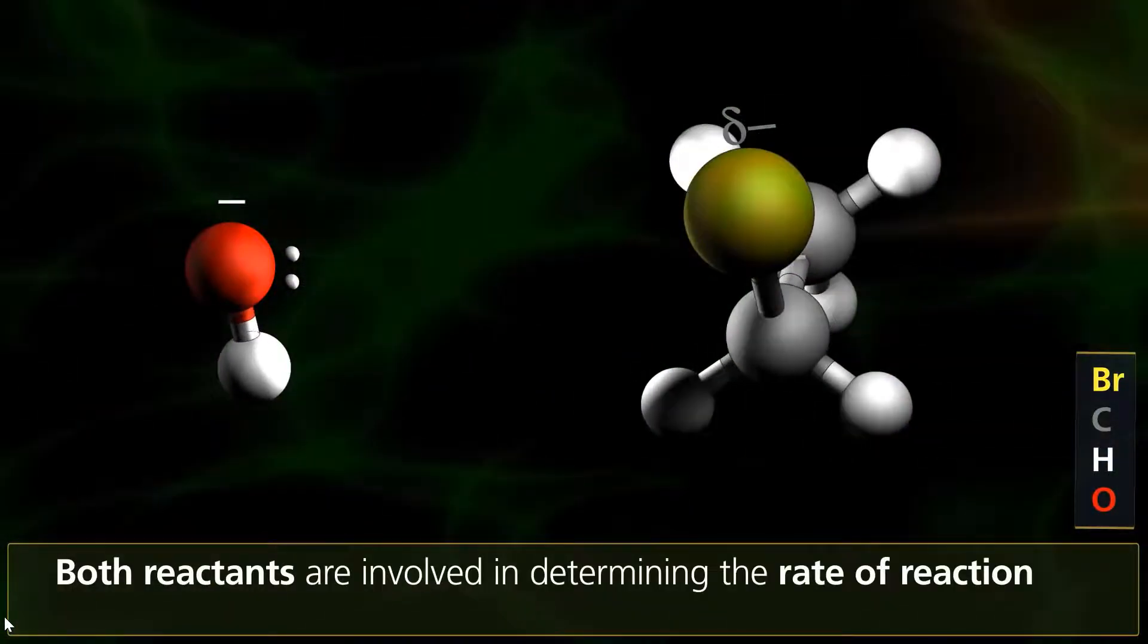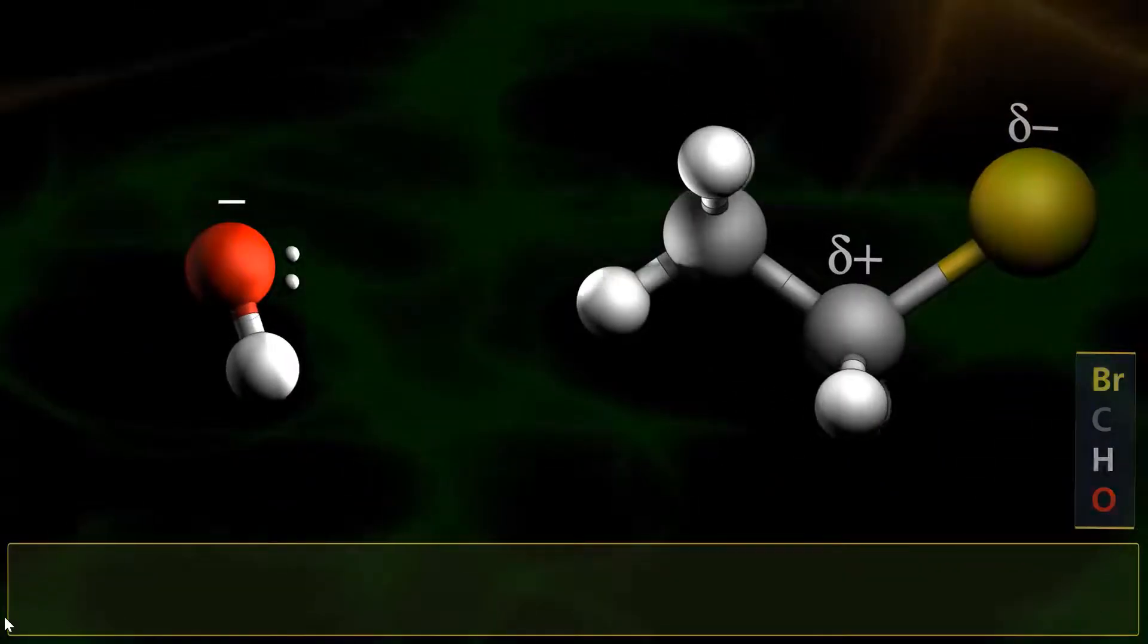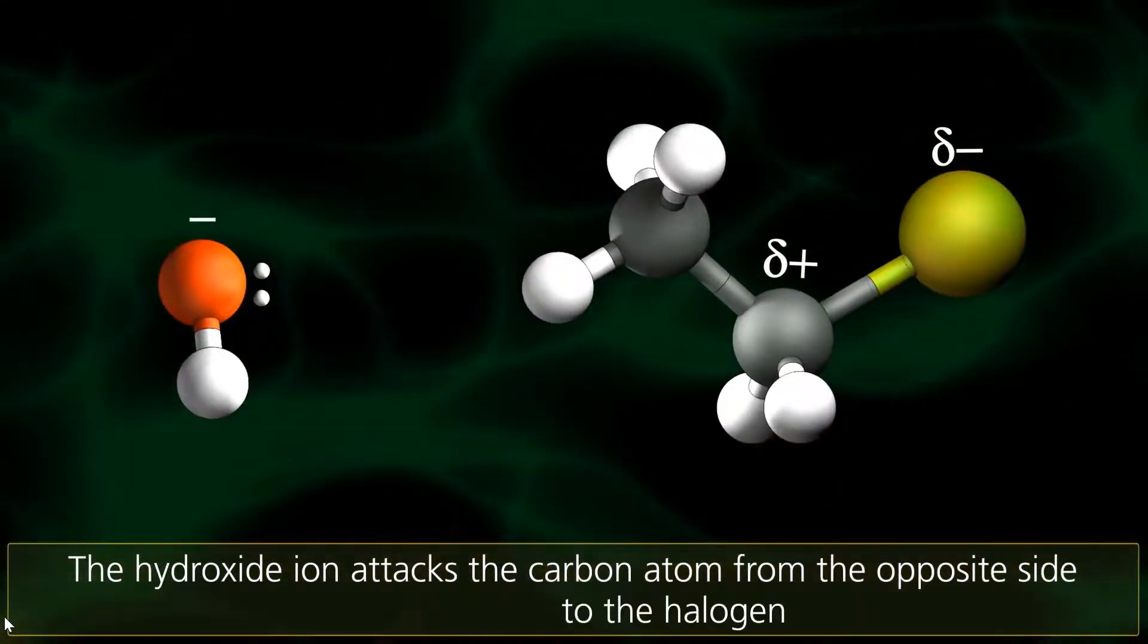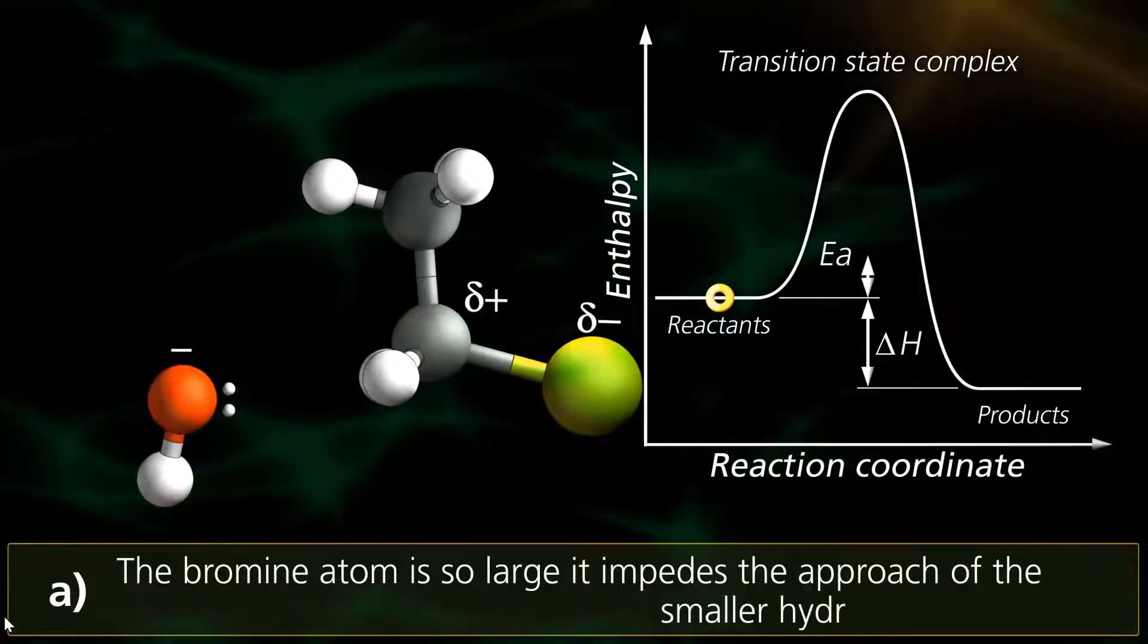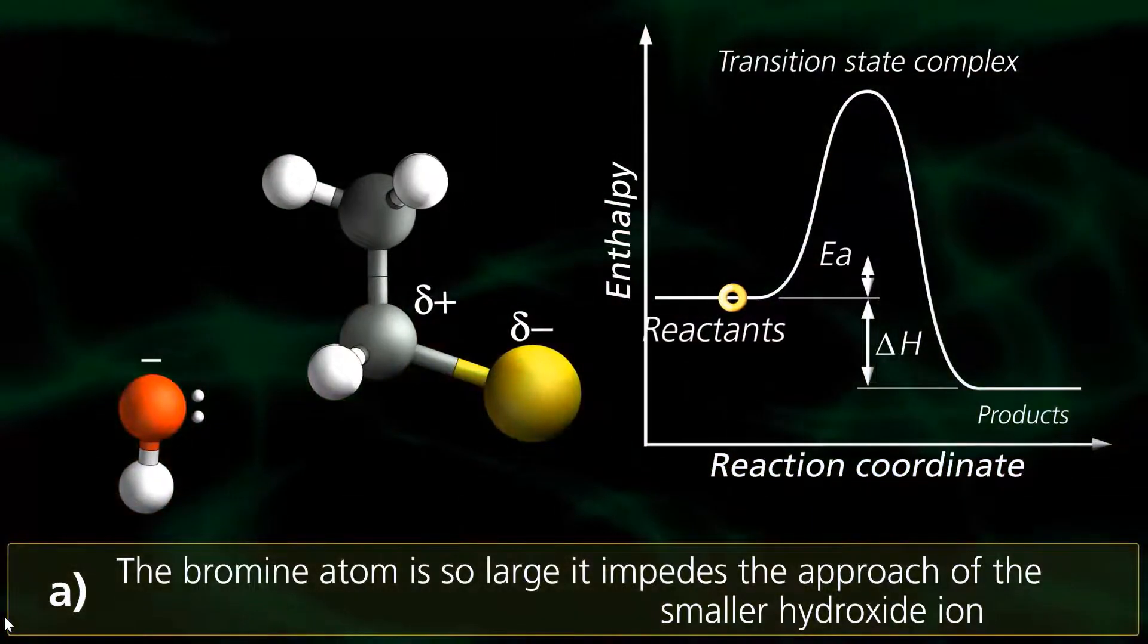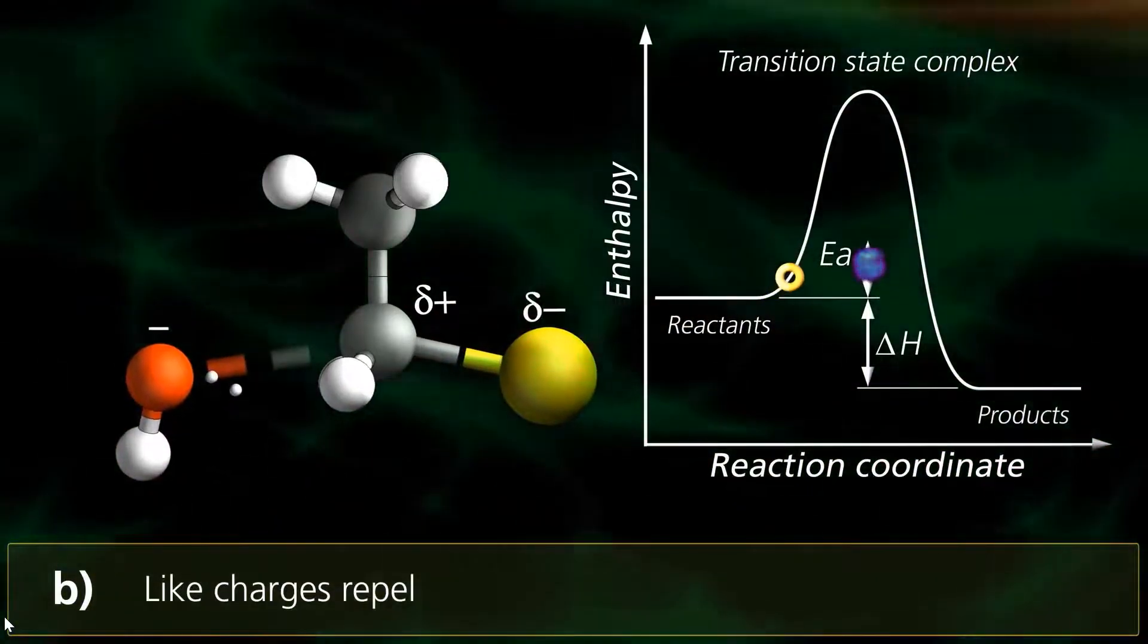Consider the reaction between a hydroxide ion in solution and bromoethane. Both reactants are involved in determining the rate of the reaction in a one-step process. The hydroxide ion attacks the carbon atom from the opposite side to the halogen atom, because the bromine atom is so large it impedes the approach of the smaller hydroxide ion, and it repels the negative-charged nucleophile.